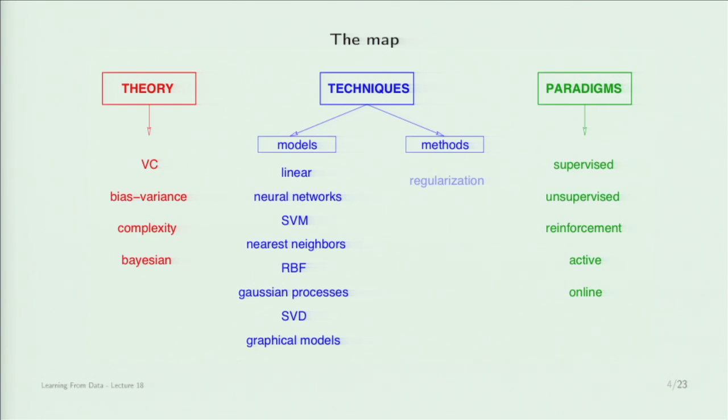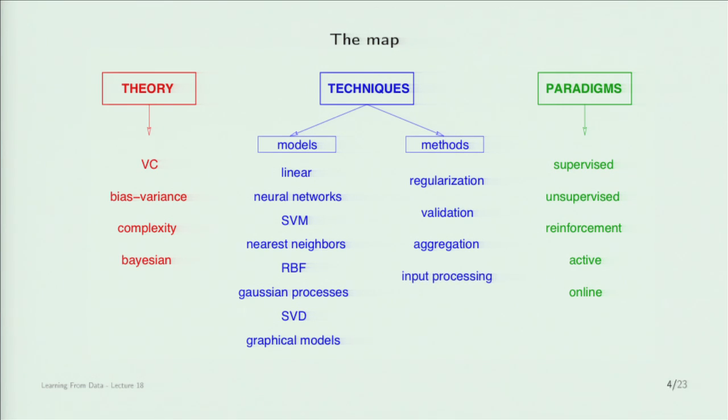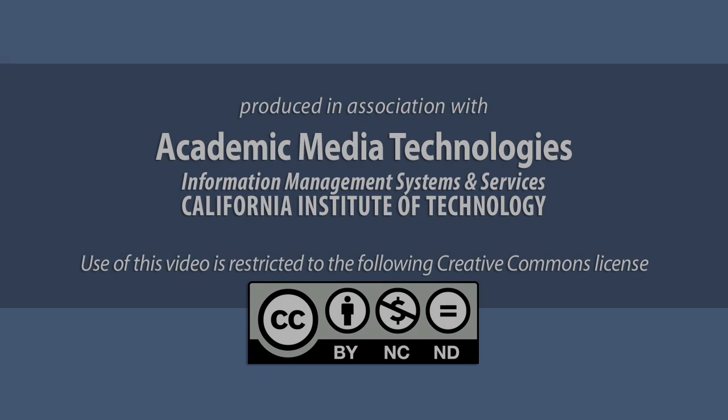The methods are very important because they cover a lot of territory regardless of the model used. We used regularization and validation. Things we didn't cover include aggregation — putting together different solutions — and input processing, which is something you do regardless of the model. Input processing is best taught within a project course: you deal with real data, and you start with principal component analysis to normalize and decorrelate the inputs. There is little intellectual value to input processing — it's a practical matter best taught in a practical course.